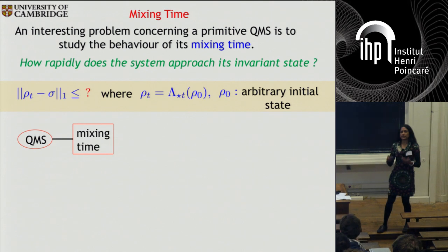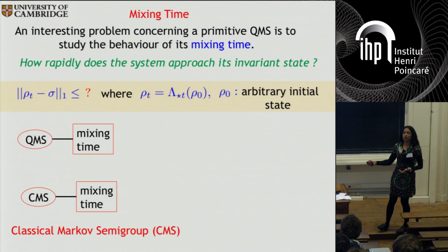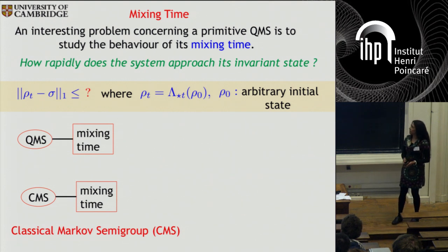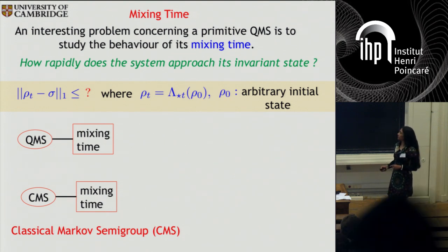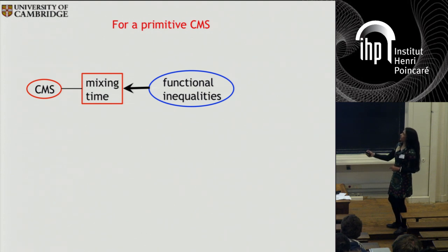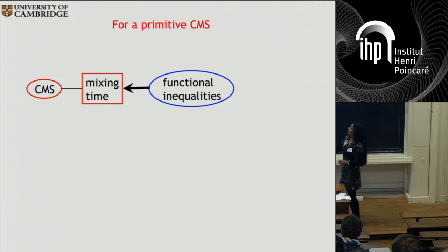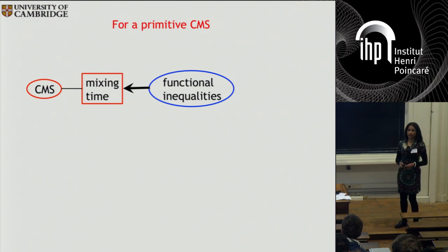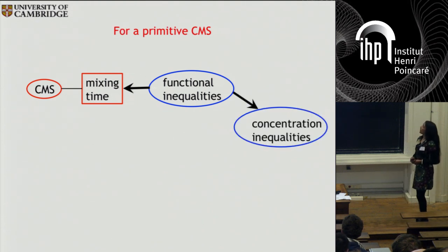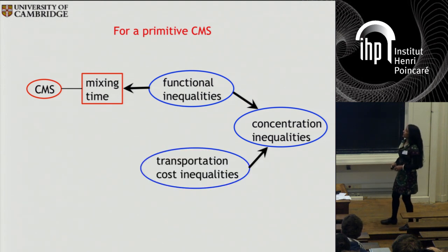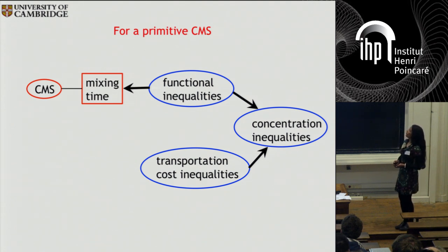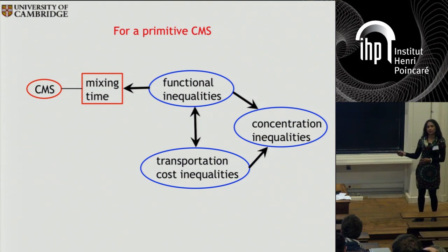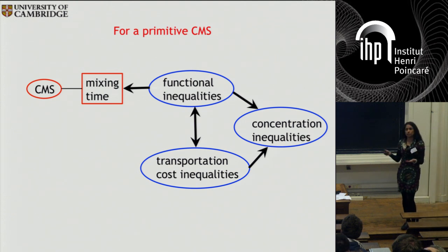Quantum Markov semigroups are in fact non-commutative generalizations of a classical Markov semigroup, for which mixing time is a well-defined concept that has been widely studied. It is known that for studying the mixing time of classical Markov semigroups (CMS), there are powerful mathematical tools called functional inequalities. From functional inequalities one can derive concentration of measure inequalities, which have wide applications. There is also another class called transportation cost inequalities, from which one can also get concentration inequalities. Moreover, there are relations between functional inequalities and transportation cost inequalities, giving quite a nice picture of implications.